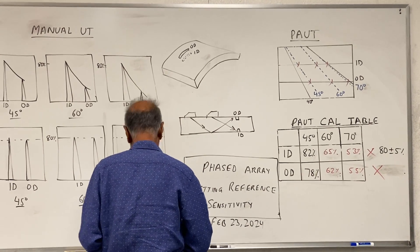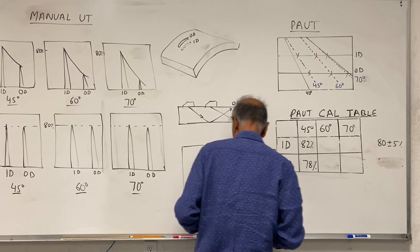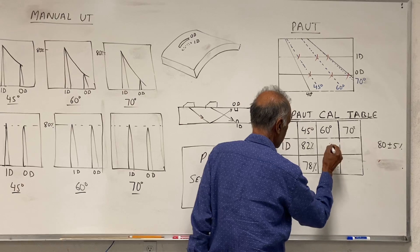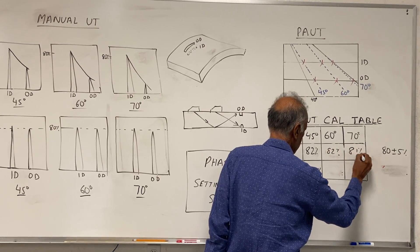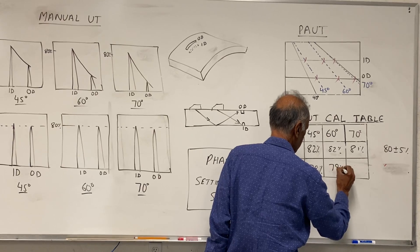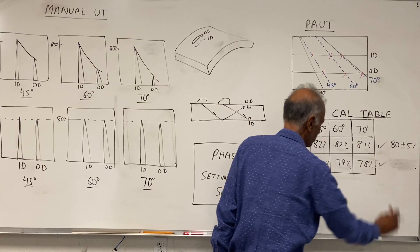So really what I am trying to say is that this should be 80%, and that's the way it should be. So let's say this comes to be 82%, 81%, 79%, and 78%—this is good, this is acceptable.